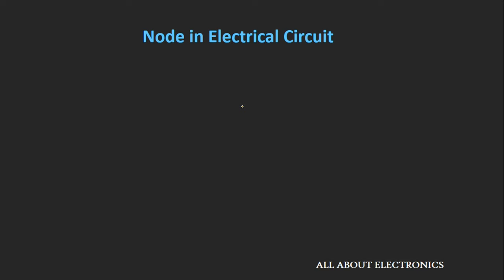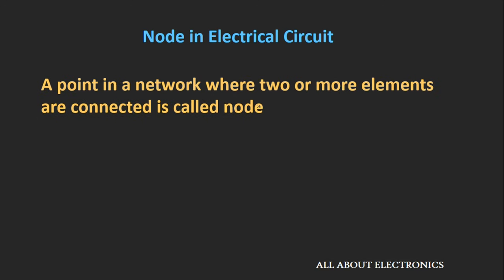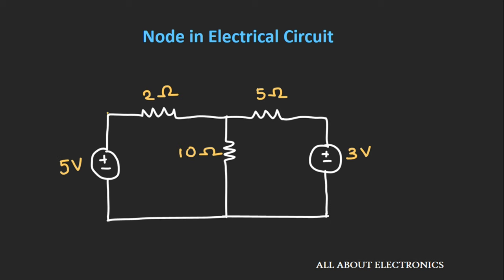Now let us see the concept of node in the electrical circuit. A point in the network where two or more elements are connected can be called a node. If you see this circuit, it contains 4 nodes. The first node connects a 5V supply and a 2 ohm resistor. The second node connects 3 resistors. The third node connects a 3V supply and a 5 ohm resistor. At the bottom, the fourth node connects the 2 voltage sources and a 10 ohm resistor.